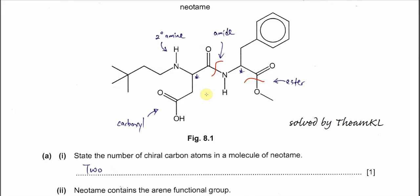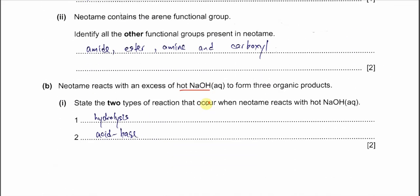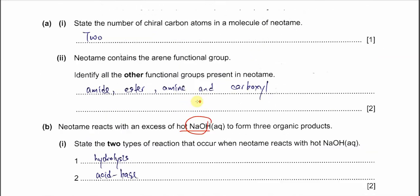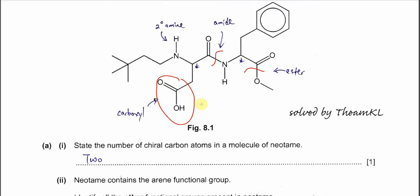Another one, you have to understand, because this is a strong base, and strong base will react with the carboxylic acid. This carboxylic acid group. Therefore, it will be two types of reaction. This is hydrolysis for the amide and ester, and the acid-base reaction between the carboxylic acid and sodium hydroxide.